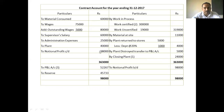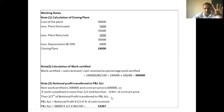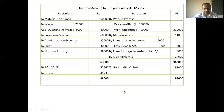National profit Rs. 98,000 carried forward. Work certified is Rs. 3 lakh and contract price is Rs. 6 lakh — that is exactly half. Since work completed is more than half and less than three-fourths, we transfer two-thirds of notional profit to P&L account. Two-thirds of notional profit multiplied by percentage of cash received: Rs. 98,000 × 2/3 × 80% gives approximately Rs. 52,267 to P&L.